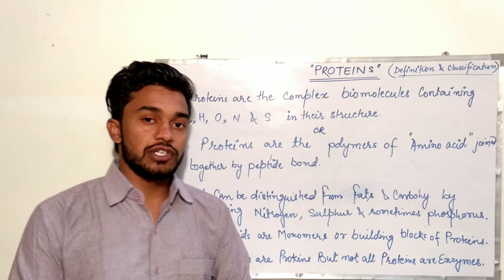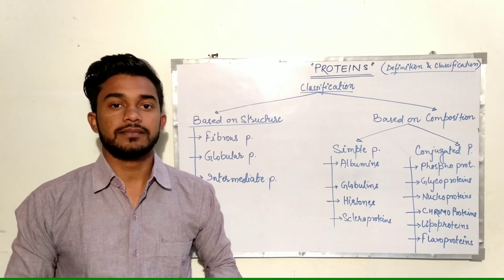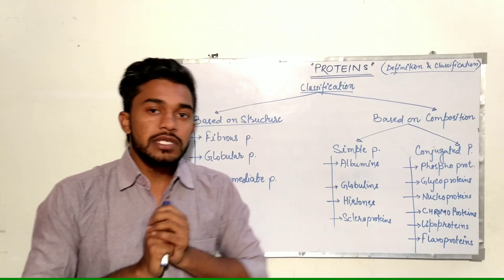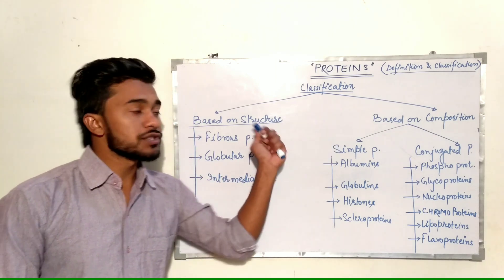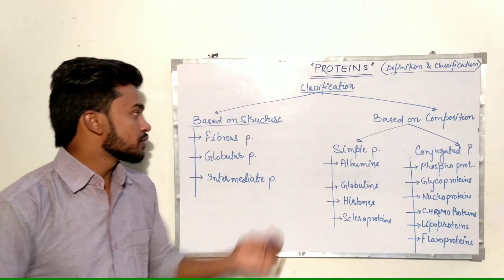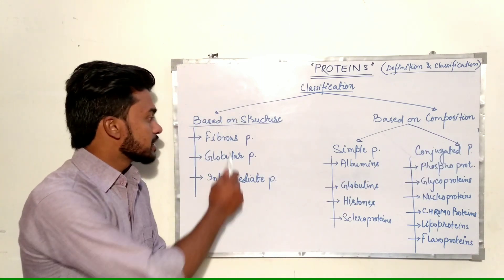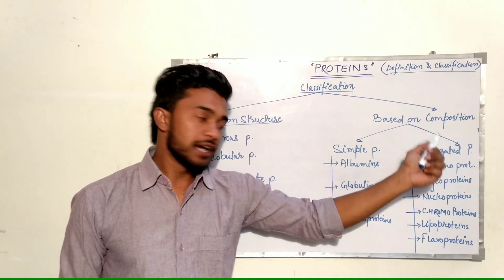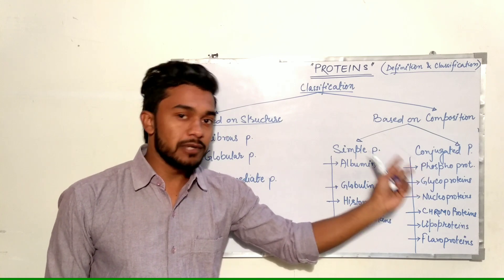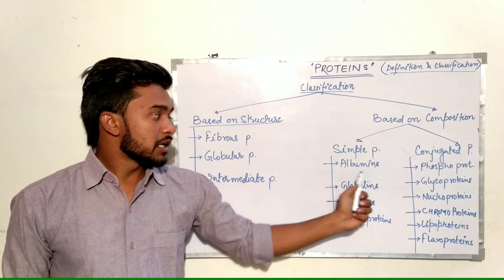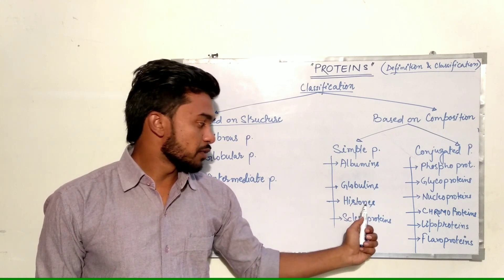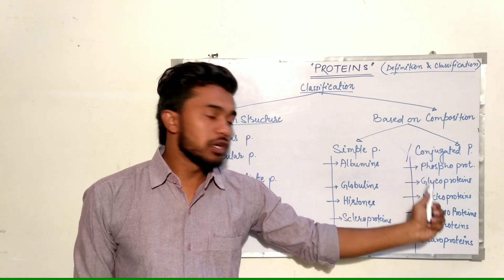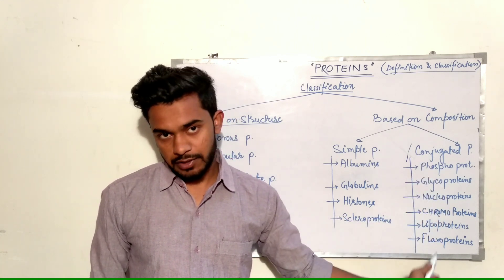Now we will discuss the classification of proteins. Proteins are classified on the basis of structure and on the basis of composition. Based on structure, we have three types: fibrous proteins, globular proteins, and intermediate proteins. Based on composition, we have two types: simple proteins (albumins, globulins, histone proteins, scleroproteins) and conjugated proteins (phosphoproteins, glycoproteins, nucleoproteins, chromoproteins, lipoproteins, and flavoproteins).